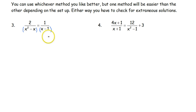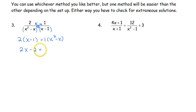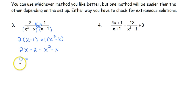Anytime you have more than one term, you've got to put parentheses around it so that you distribute. We've got 2 times the quantity x minus 1 equals 1 times the quantity x squared minus x. So we get 2x minus 2 equals x squared minus x. Since we see an x squared, we know we're going to factor.